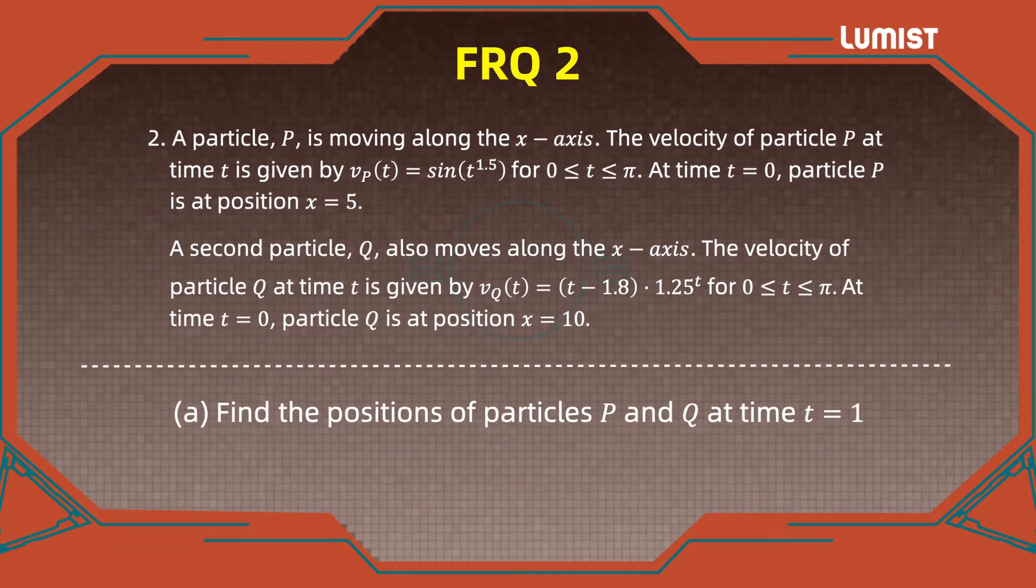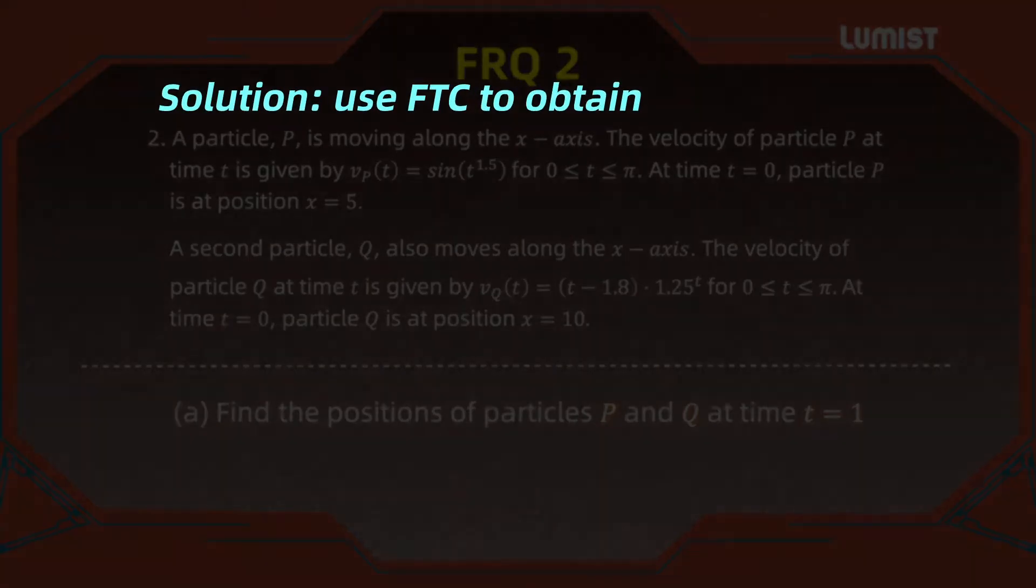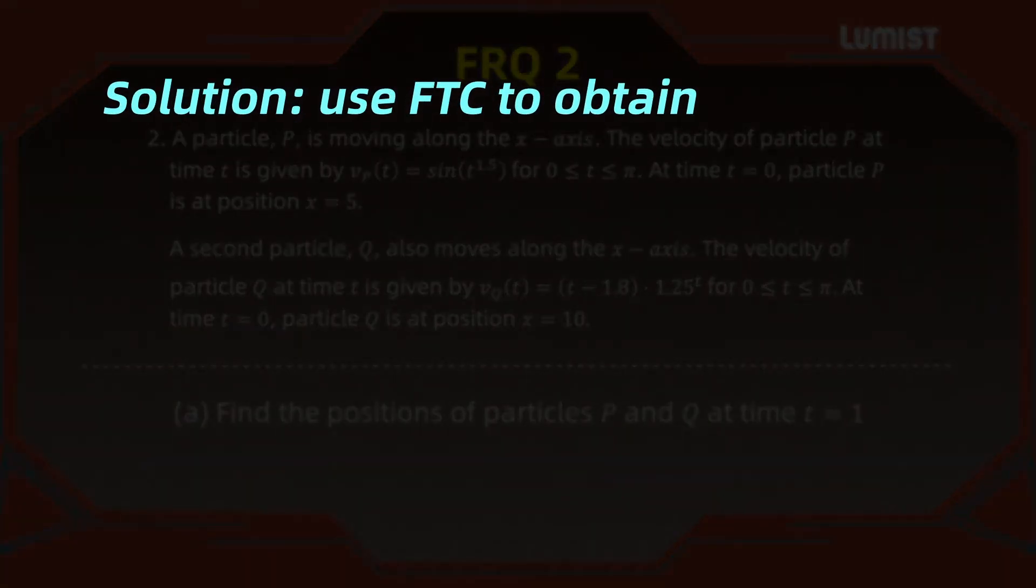For part A, we must find the positions of the particles P and Q when t equals 1. So basically here, we need to use FTC. For the solution, we use the fundamental theorem of calculus to obtain the following.